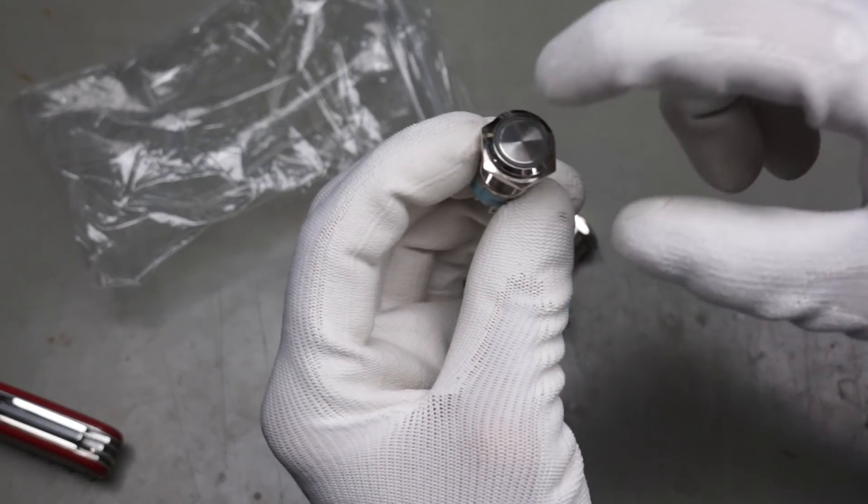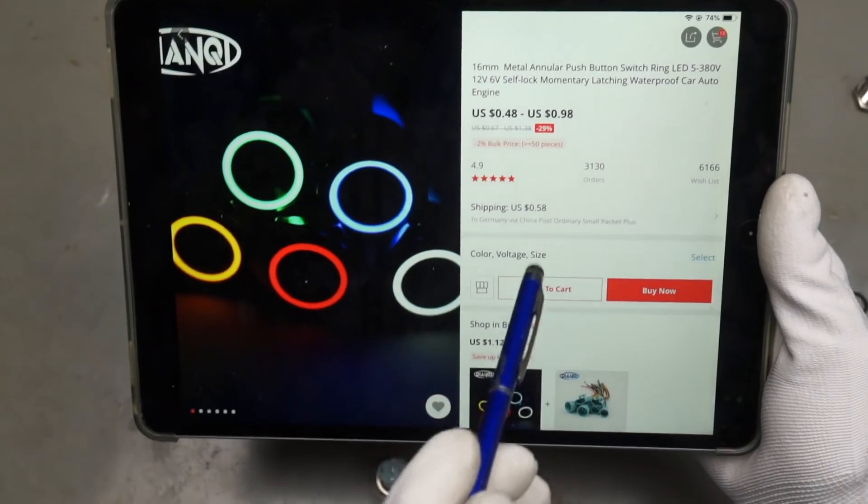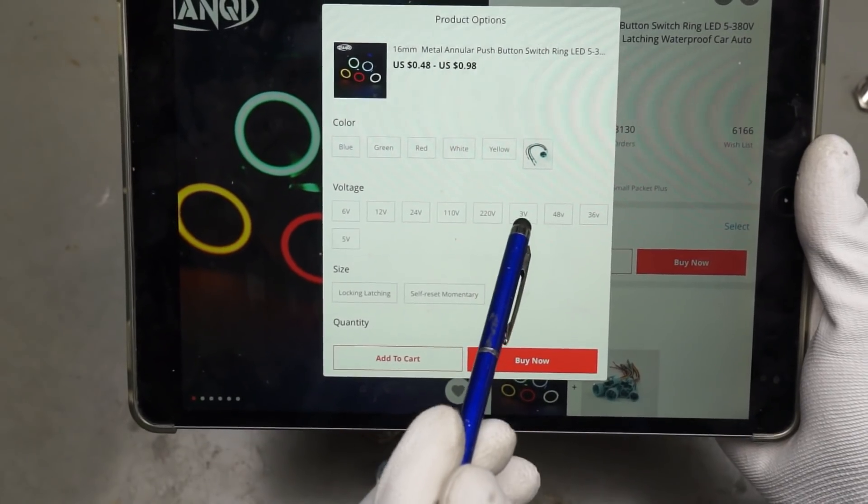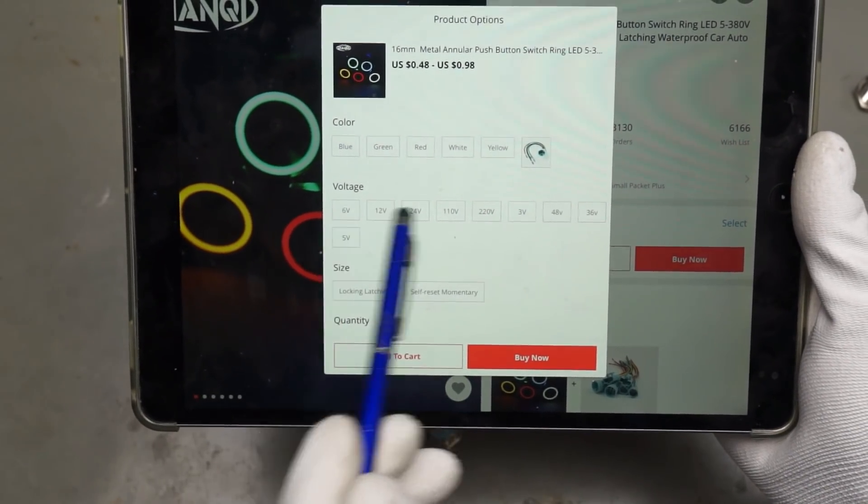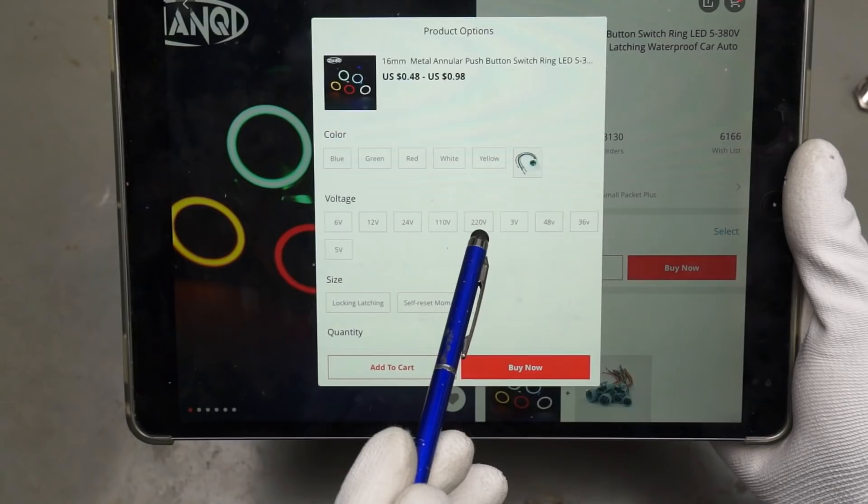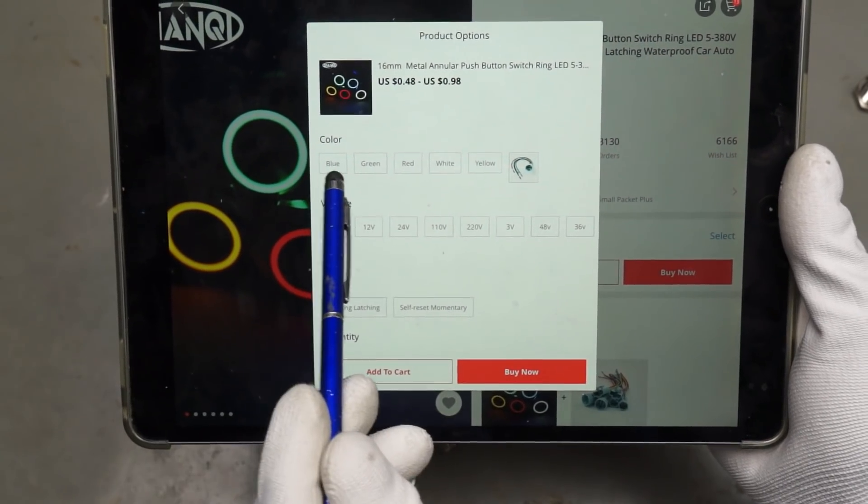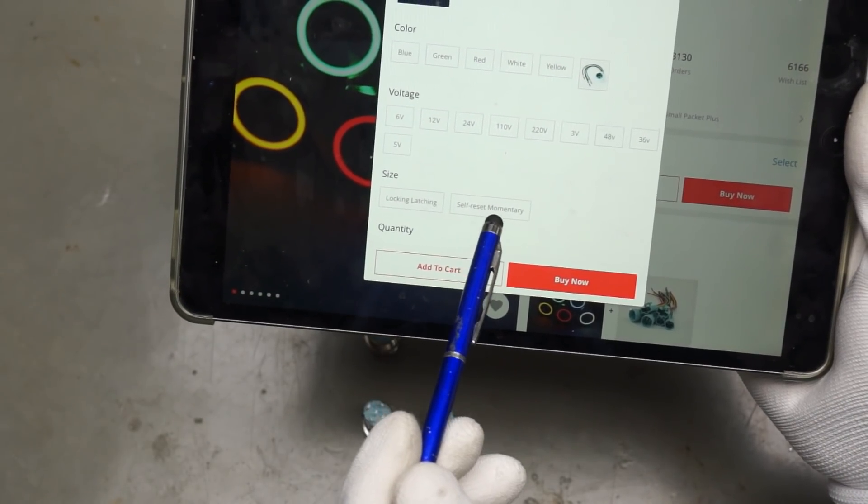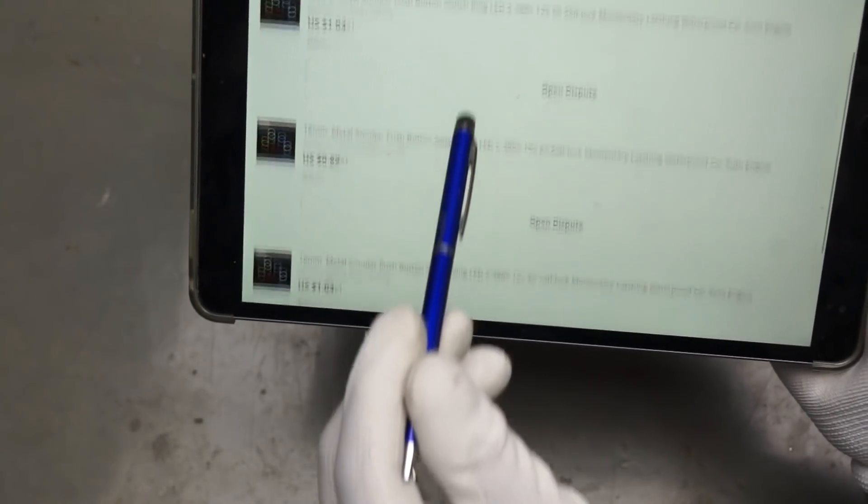Nice buttons with a built-in LED. You get them in different voltages from 3 volt, 5 volt, 6 volt, up to 220 volt. And you get them in several colors. Also locking or momentary. I bought a few of them.